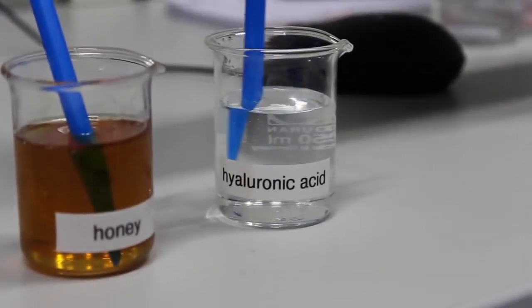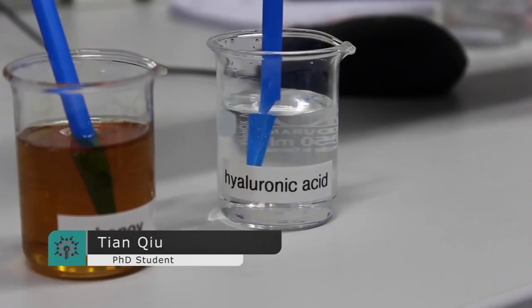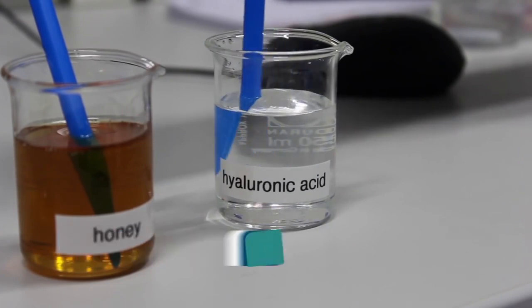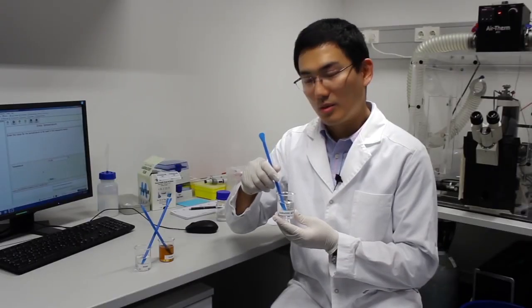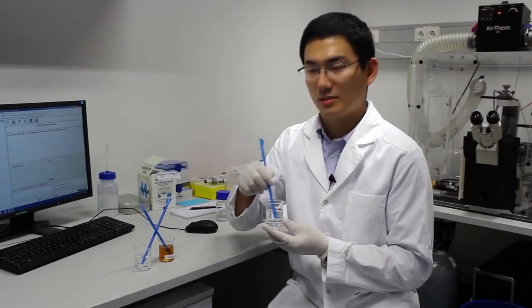Here this is a beaker of hyaluronic acid. This is a shear thinning fluid and when I move the spoon slowly in the fluid it will be higher resistance, but if I move really fast the spoon in the beaker it will be lower resistance, so low viscosity at higher speed.